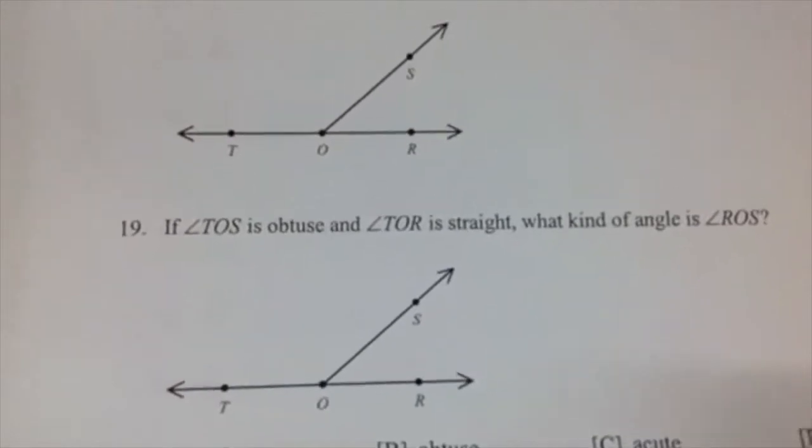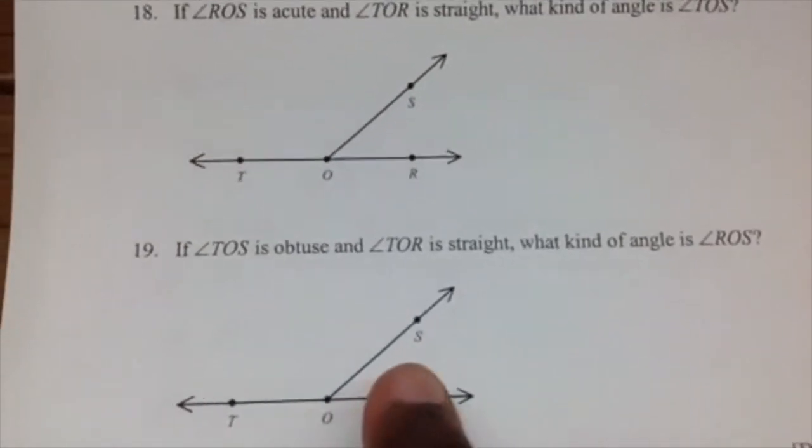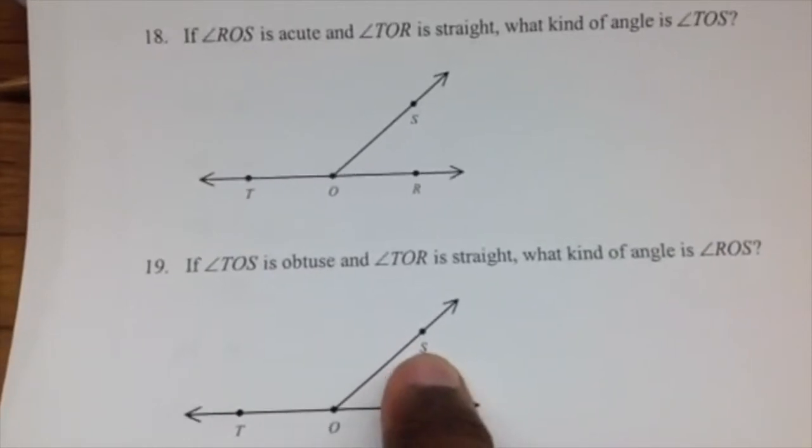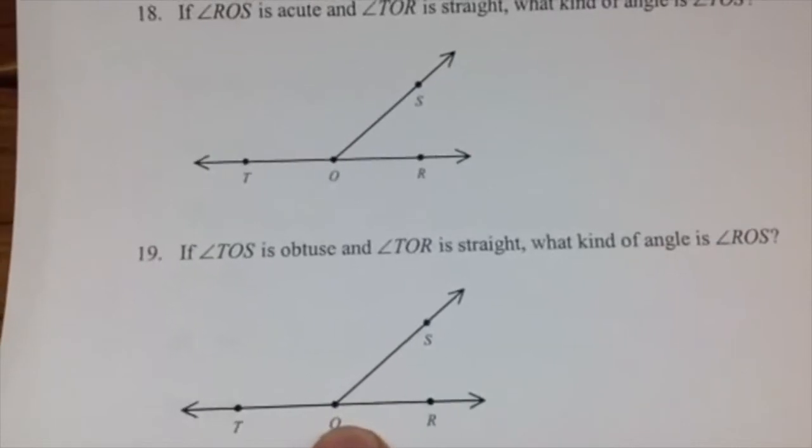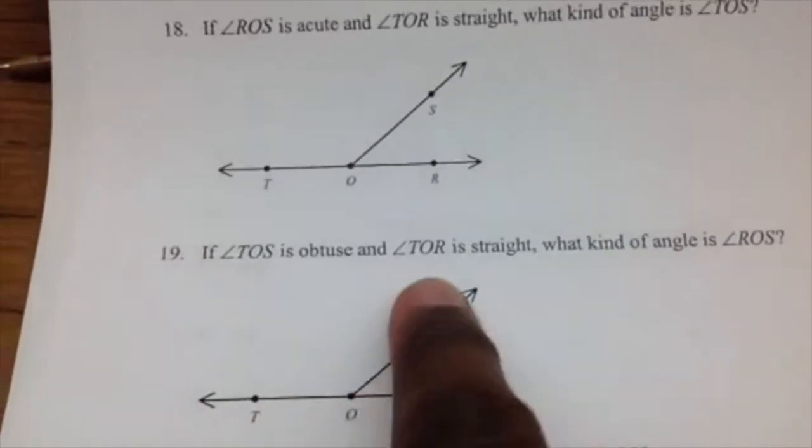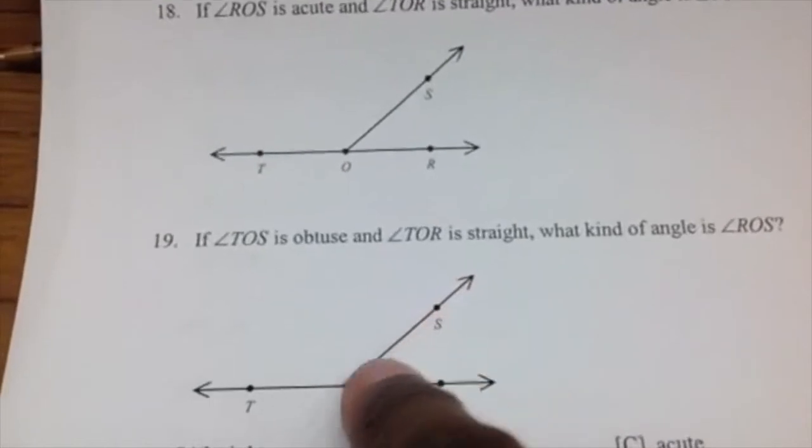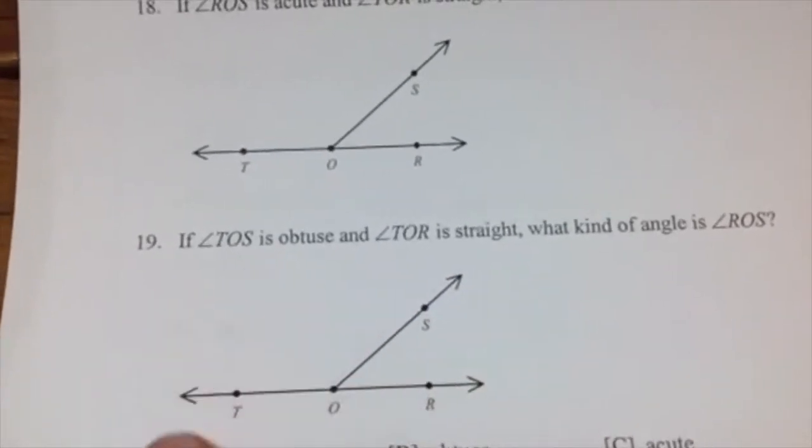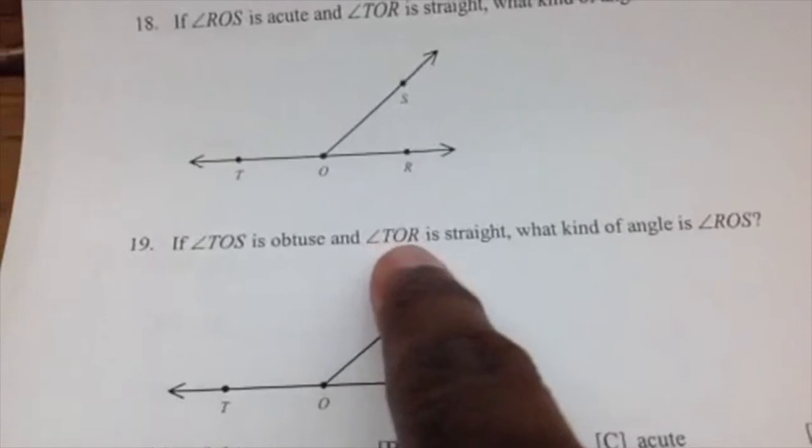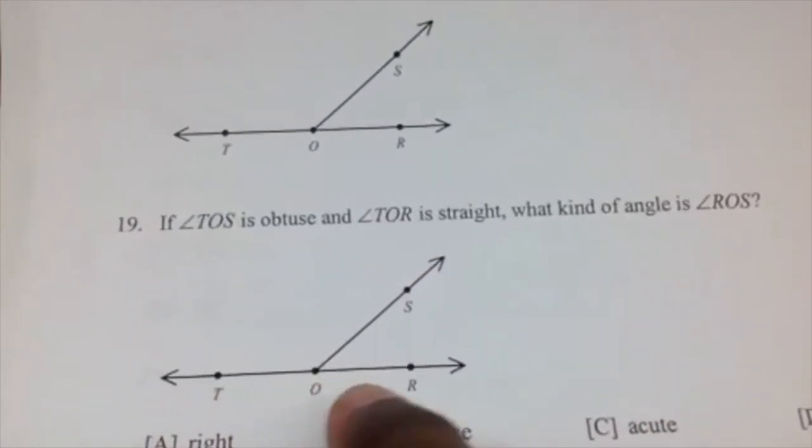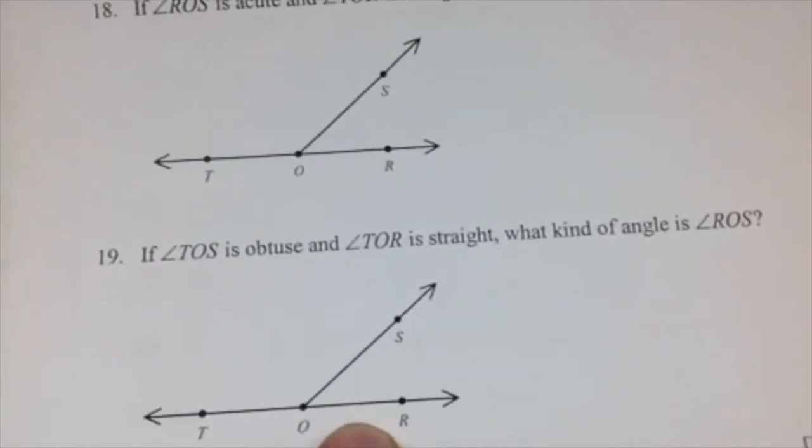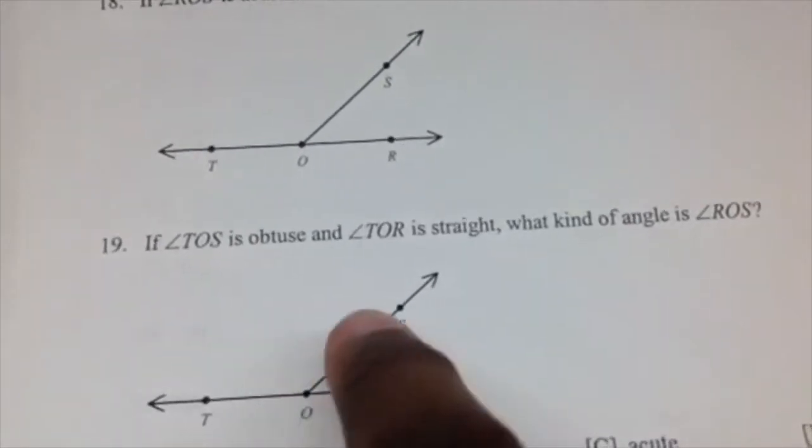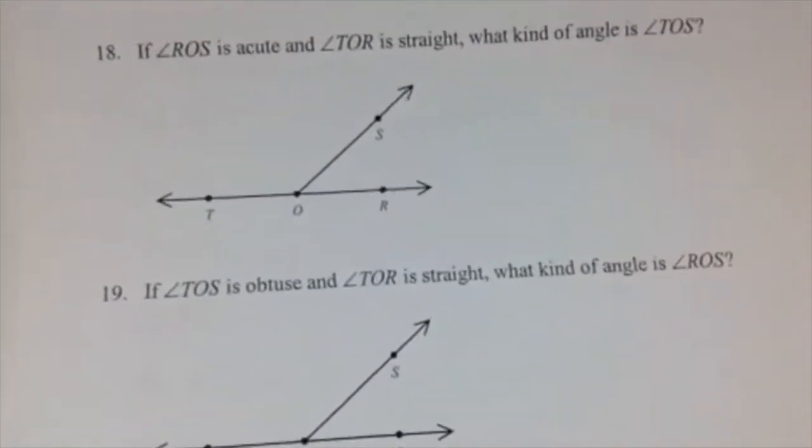Same with number 19. It's asking and telling you that TOS is obtuse. That's over 90 degrees. You can see that O is right here in the middle. That's the vertex of both this angle and this straight angle, and also this acute angle. So if TOS is obtuse, and TOR is a straight angle, what kind of angle is ROS? You need to define that.